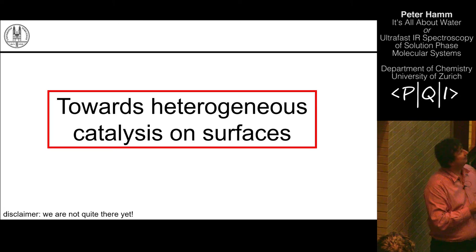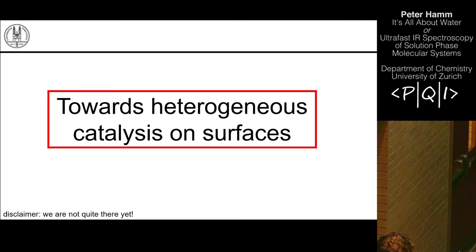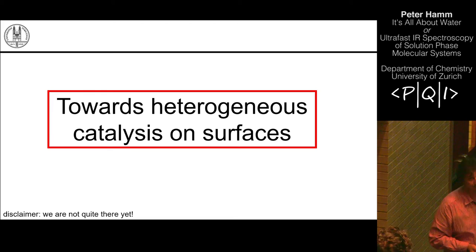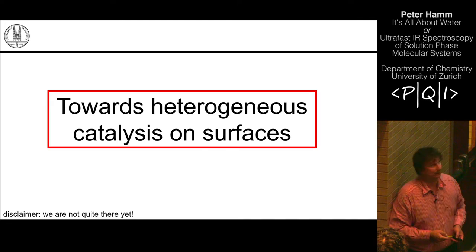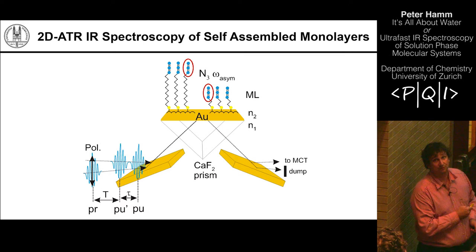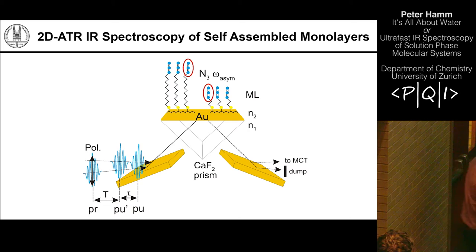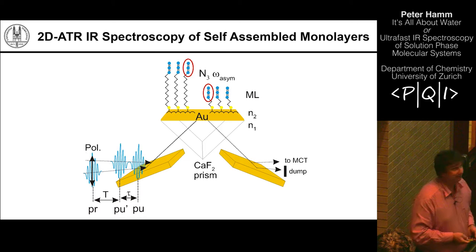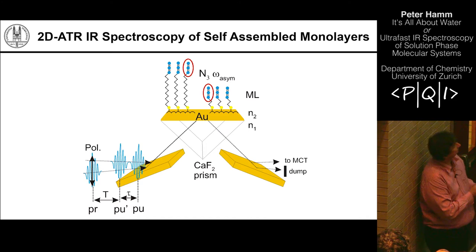All that was done in solution phase — homogeneous catalysis. Solution phase is nice because the molecular systems are reasonably well characterized and the spectroscopy is comparably simple. But I think it's fair to say that a solution-phase homogeneous catalytic system will never work in practice. Once we combine the water reduction side with the water oxidation side, there are too many redox-active species in solution and we cannot avoid side reactions. Nature didn't manage to work in a homogeneous environment either — nature uses membranes to structurally organize these systems, and we will have to do the same.